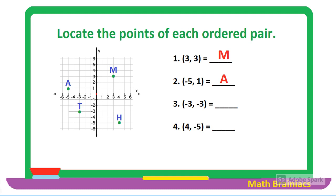For the ordered pair (-3, -3): since the x-coordinate is negative 3, we move 3 units to the left; the y-coordinate is also negative 3, so we move 3 units down — we reach point C. For the ordered pair (4, -5): the x-coordinate is positive 4, so we move 4 units to the right from the origin; the y-coordinate is negative 5, so we move 5 units down — and we reach point H.